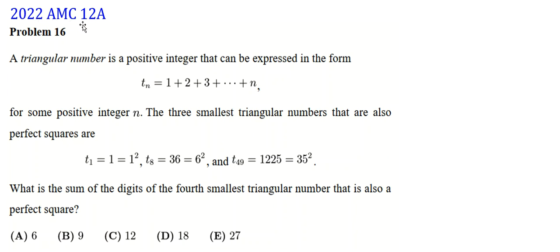AMC 2022 12A Problem 16, American Mathematics Competition. We want to solve this problem. This problem has an important idea in number theory: when we have a product of two numbers equal to a perfect square, or two times a perfect square, it is very useful in BMO, British Mathematical Olympiad, and other math exams.